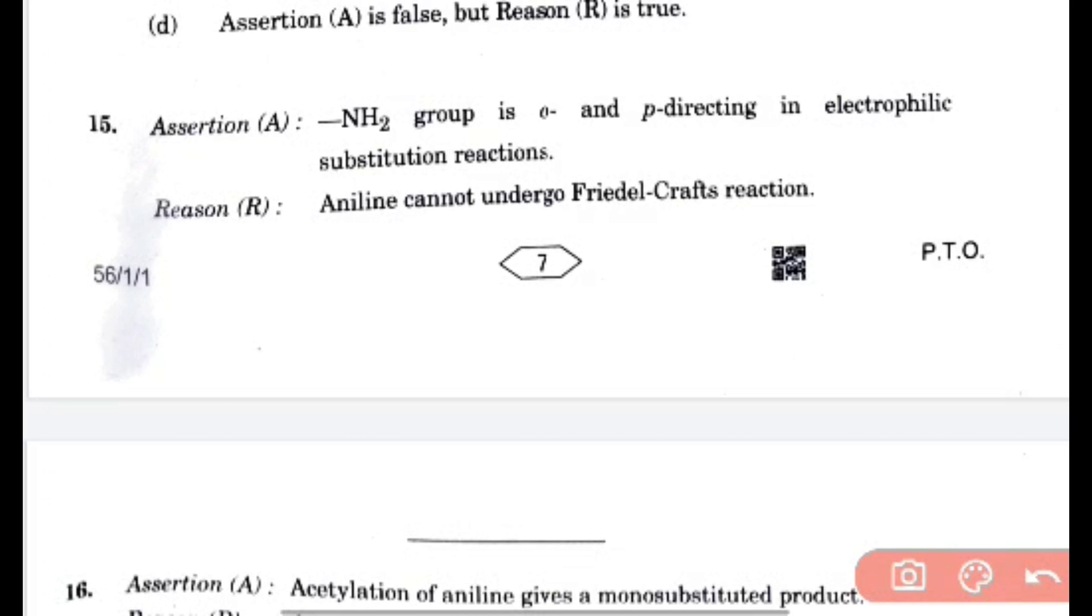Acetylation of aniline gives monosubstituted product, yaise hi baat hai. Activating effect of NHCOCH3 is more than that of amino group, nahi, ye galat baat hai. So option C will be the right answer.